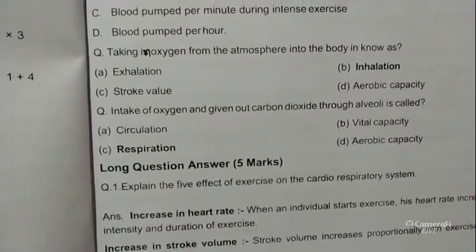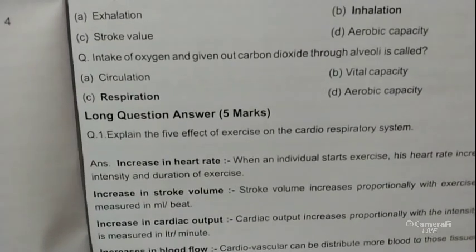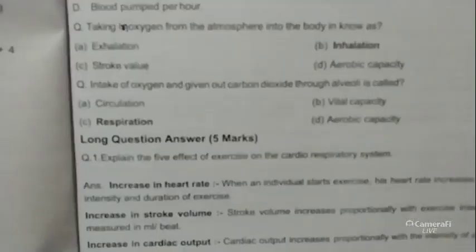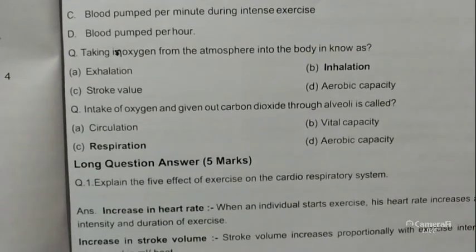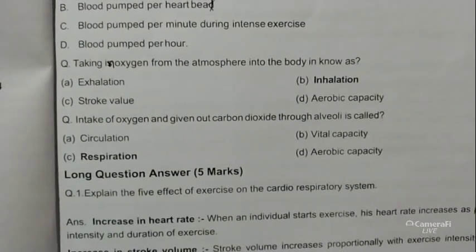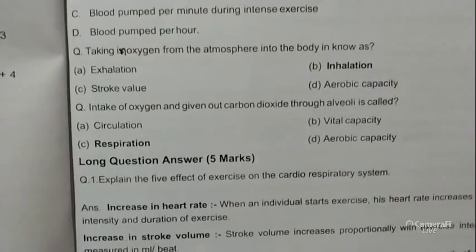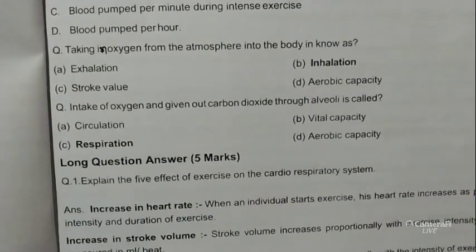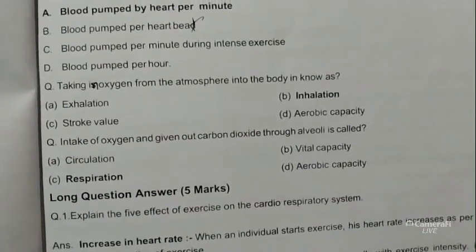Five-mark question: explain five effects of exercise on the cardiorespiratory system. Number one, increase in heart rate: when an individual starts exercise, heart rate increases as per the intensity and duration of the exercise. Number two, increase in stroke volume: stroke volume increases proportionally with exercise intensity; it is measured in ml per beat. Number three, increase in cardiac output: cardiac output increases proportionally with the intensity of exercise; it is measured in litres per minute.